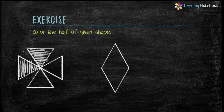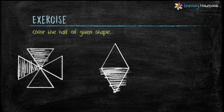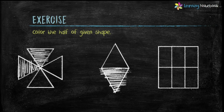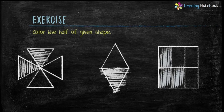Now let's take a look at the second shape. It has 2 parts, and we have to color half of this shape. So divide 2 by 2. We get 1. So color 1 part of this shape. Now let's look at the third figure. How many parts does it have? It has 6 parts. So divide 6 by 2. We get 3. So color 3 parts of this shape.